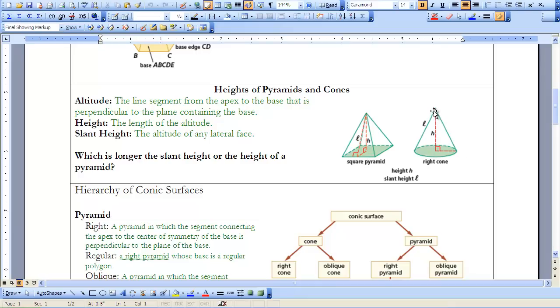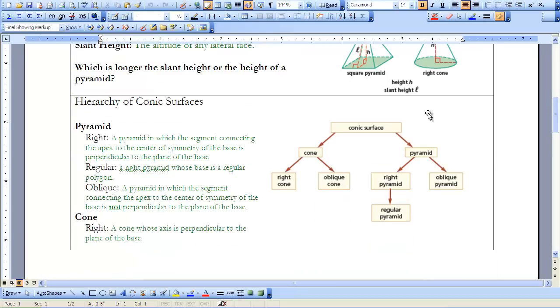The same thing applies to the cone. The height goes from the center of the circle base. If it's a right cone, it will go to the center. If it's an oblique cone, we just drop from the apex to the base perpendicular, and that would give us our height. The slant height is the lateral surface from the edge of my base to the apex.